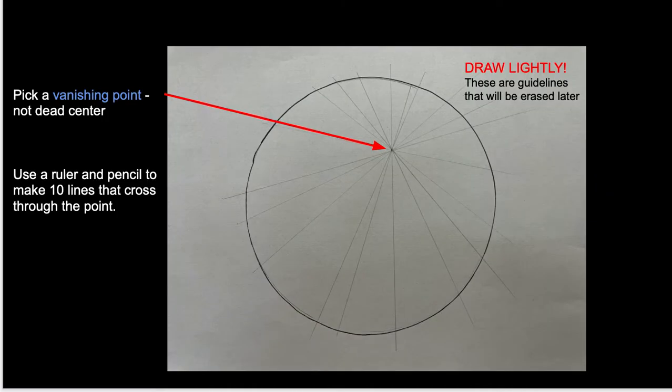So the next thing is to pick a vanishing point. You can see here that I picked one that was not dead center, and I highly recommend this. It makes for a much more interesting drawing. So go off center somewhere. Don't go too close to the edge, or you'll have trouble making buildings on that side. Use a ruler and a pencil. I recommend 8 to 10 lines that cross through the vanishing point. Draw lightly, because a lot of these are going to be erased. This is just your guidelines.